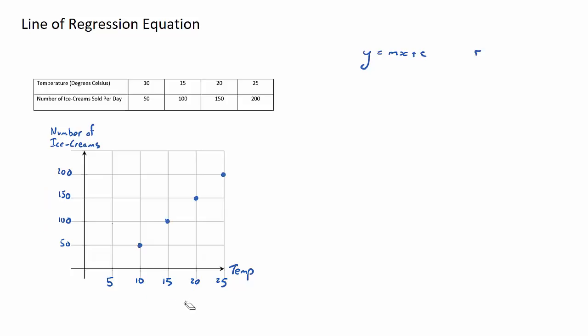I want to find the line of regression equation for this particular data set, and what that will mean if I try to plot a line of best fit over these data points. I've just drawn that line as best fit, and this line of regression equation is simply the equation of this line. It will be in the form of a linear line, which is y equals mx plus c. Just to recap, the m is the gradient and the c is the y-intercept.